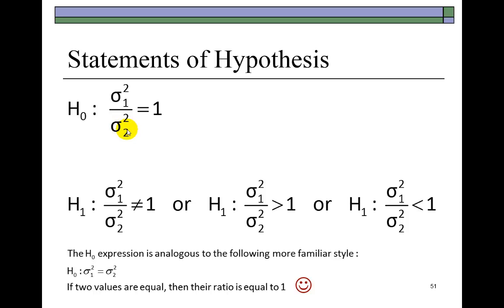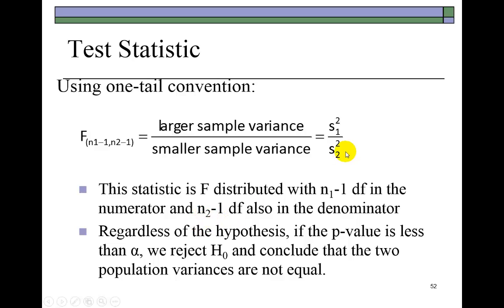Well, the choice as to whether to do a one-tail test or a two-tail test is determined by the nature of the problem that you are investigating. But regardless of whether you're doing a one-tail or two-tail test, we're going to use the one-tail convention to calculate the F statistic. And the one-tail convention requires that we divide the larger sample variance we obtain from the data set by the smaller sample variance. This statistic is F distributed with n1 minus 1 degrees of freedom in the numerator and n2 minus 1 degrees of freedom in the denominator.